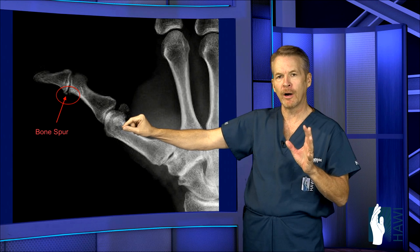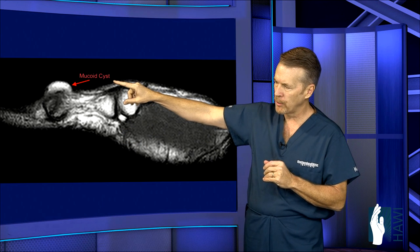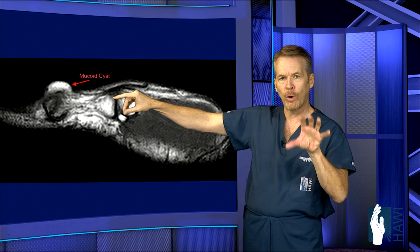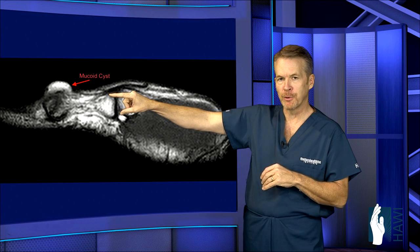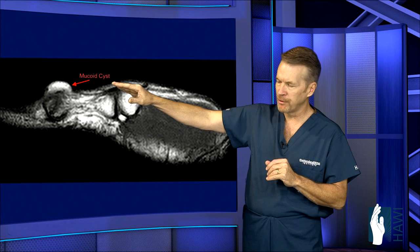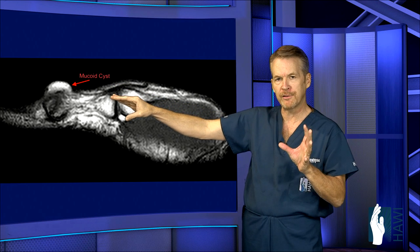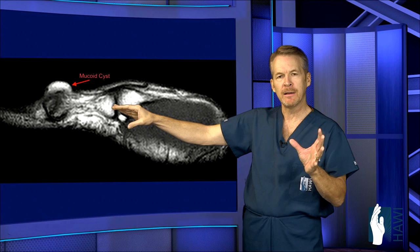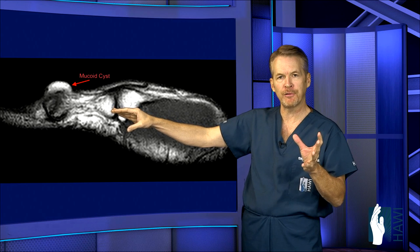In some patients, an MRI will be obtained. As you can see from this next image, the mucoid cyst — labeled with an arrow — is this white structure right over the distal interphalangeal joint or DIP joint, and it is filled with fluid. It shows up on MRI as a white structure, just to further diagnose what's going on and distinguish this mass from others.